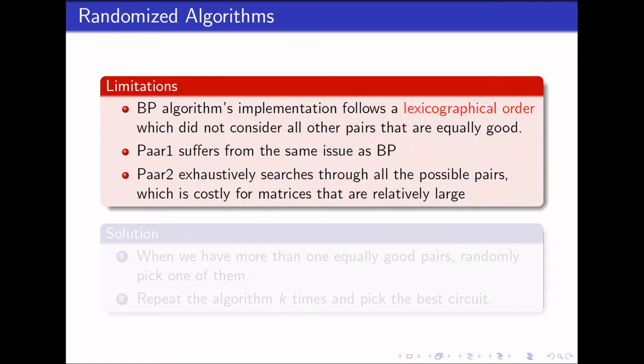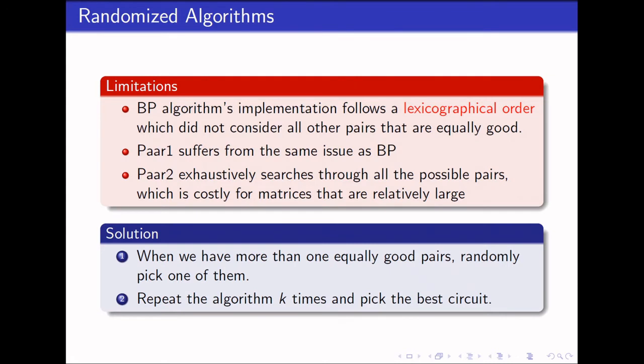Now we can talk about the description given in the BP as well as the Pa's algorithm. So all of them suffer about the same issue, which is that the implementation follows a lexicographical order, which did not consider all other pairs that are equally good. In Pa1, it suffers the same issue as BP. For Pa2, it actually exhaustively searches through all possible pairs, which is actually quite costly for matrices that are relatively large. One solution that we can have is that whenever we have more than one equally good pairs, we randomly pick one of them, and then we repeat the algorithm k number of times, and then we pick the best circuits out of it. By randomizing the algorithms, it is also a good way to measure how well the criteria or how well the algorithm actually works in general.